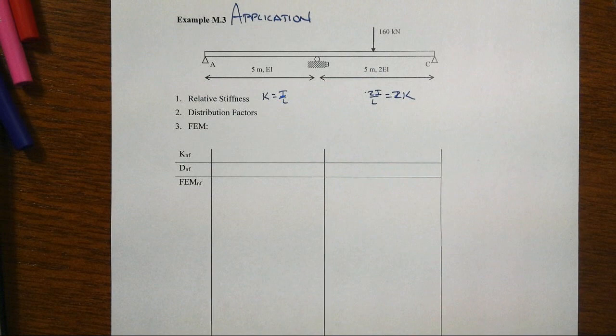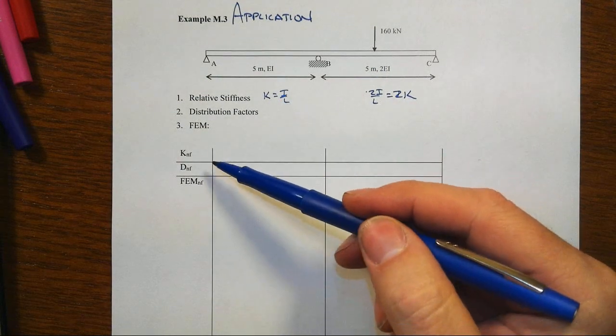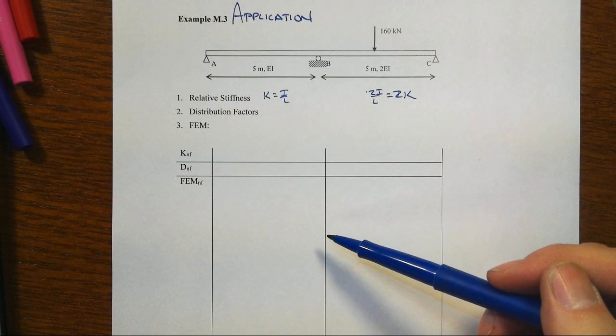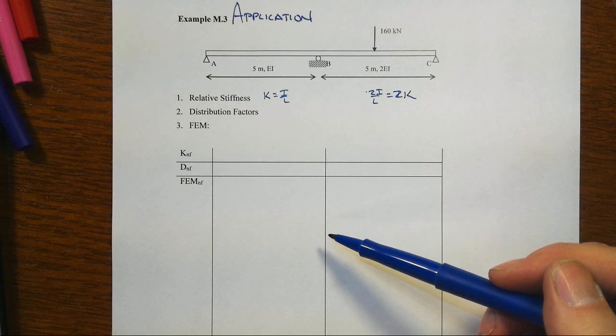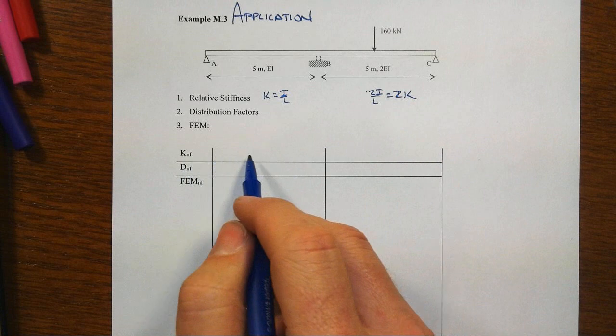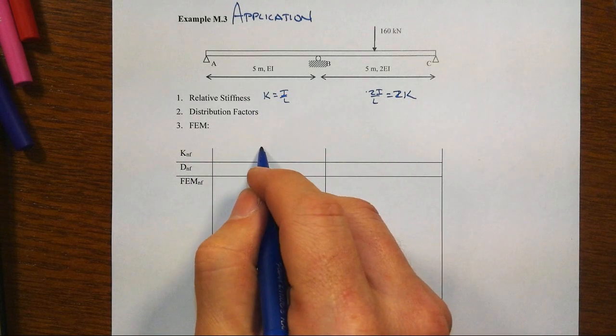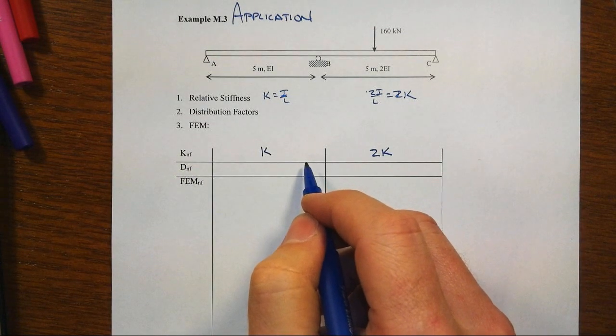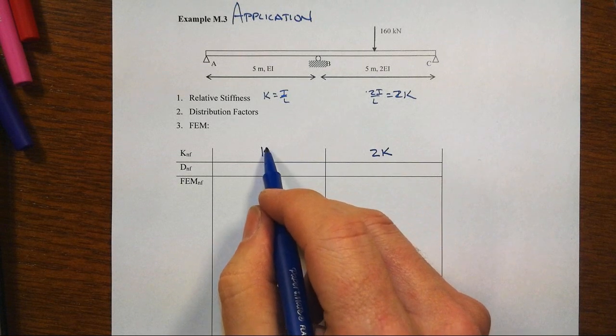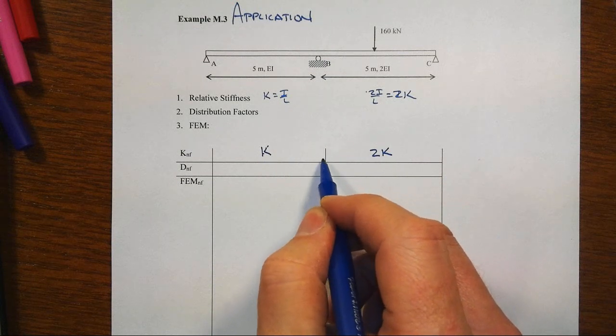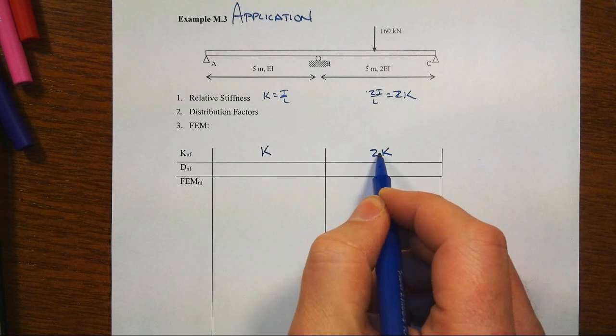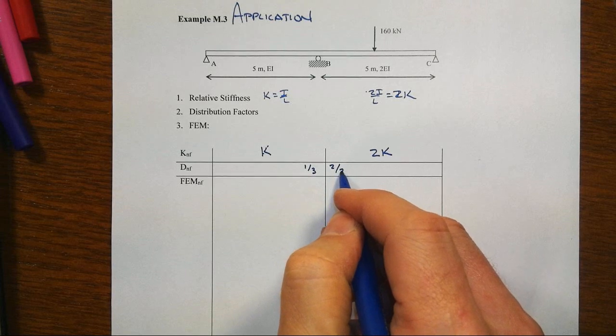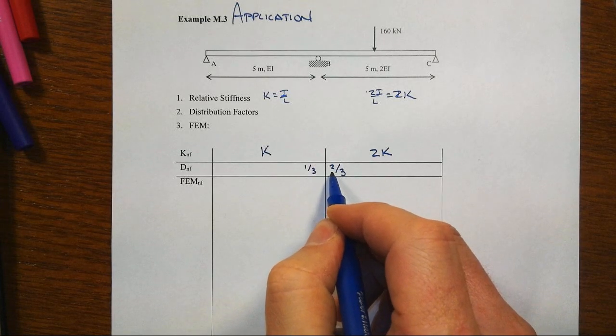Now in terms of setting up your actual work, what you really want to do is draw vertical lines at each and every one of these joints. The math that we're going to do is going to look very tabular in its orientation. This first row we've got are these relative stiffnesses that we have for each member, K and 2K. And then remember the distribution factor is just at that particular joint, we're going to take the K of that member divided by the sum of all of the members that frame into that joint. In this case there's only two, so that's K over 3K or a one-third factor. And then the other one of course would be two-thirds factor. The sum of all of those has got to be one at that joint.